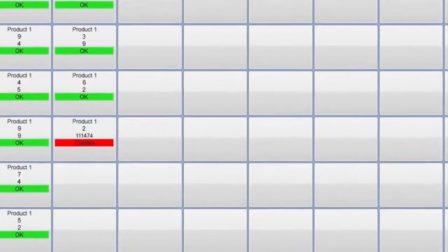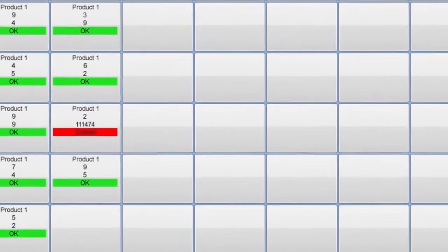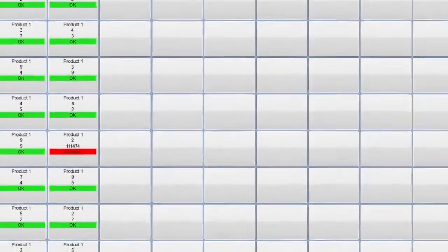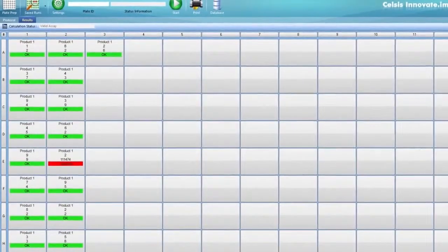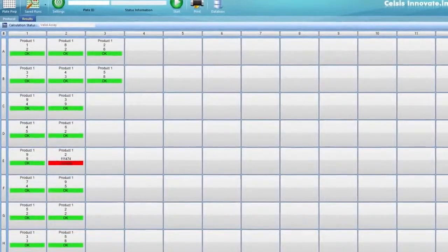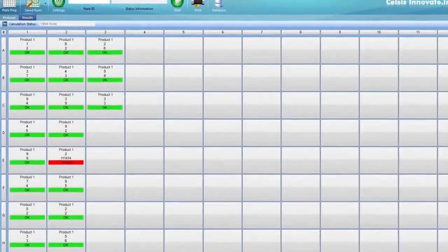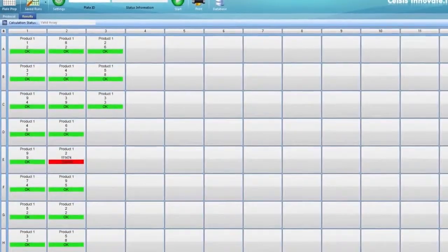Positive results are highlighted in red, based on predetermined levels that are established during product validation. All the samples that test negative for microbial contamination are highlighted in green. These can be released immediately.